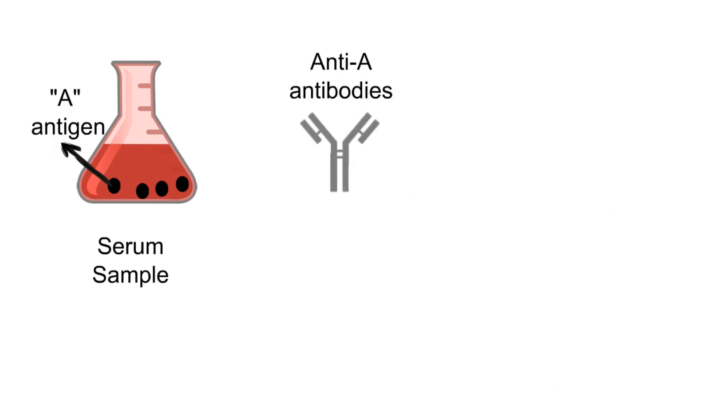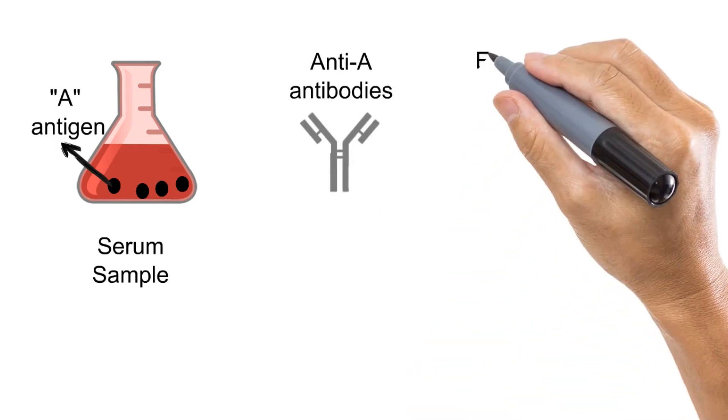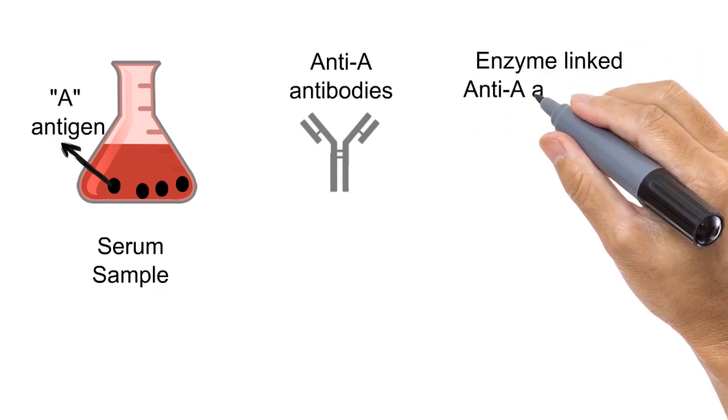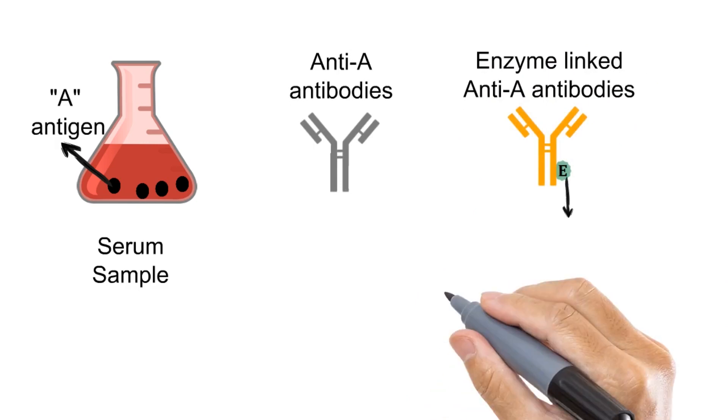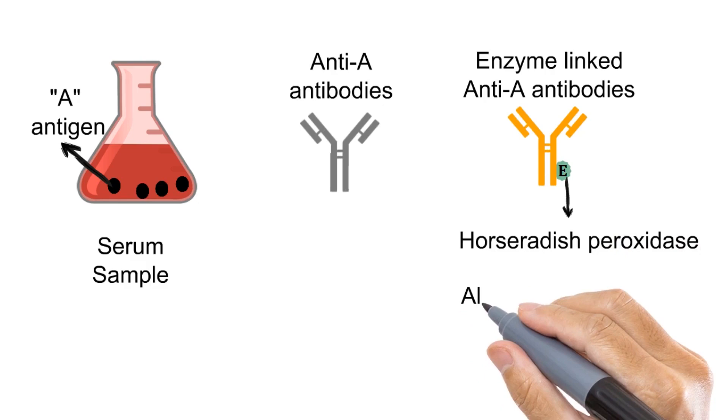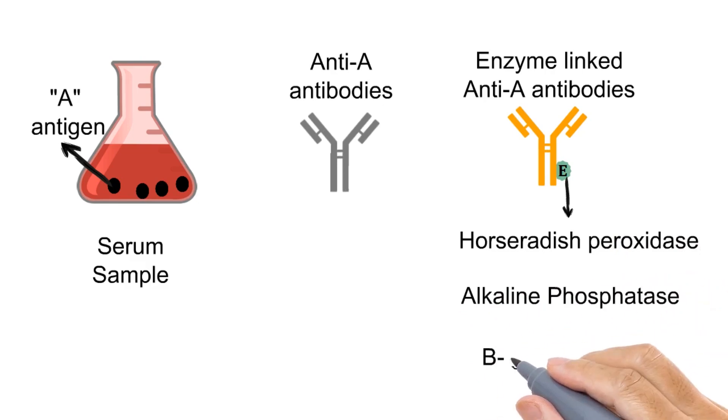Second and most important is enzyme-linked antibodies against the antigen to be detected. So in this case, we will need enzyme-linked anti-A antibodies. The enzyme coupled to the antibodies can be horseradish peroxidase, alkaline phosphatase, or beta-galactosidase.